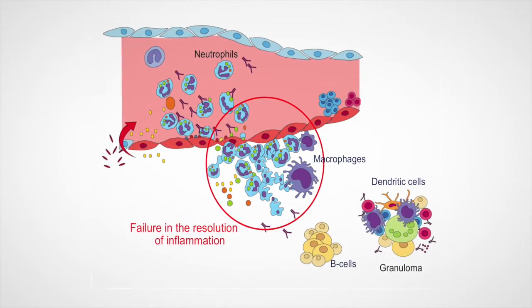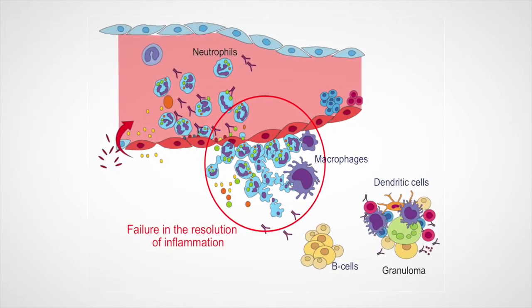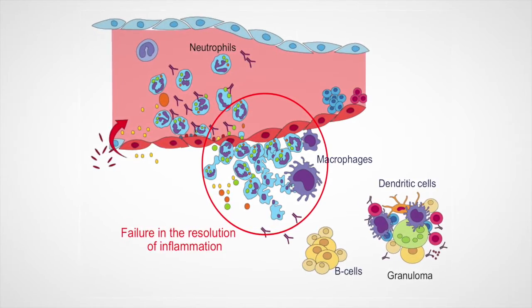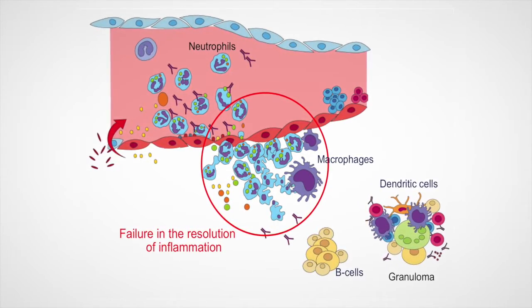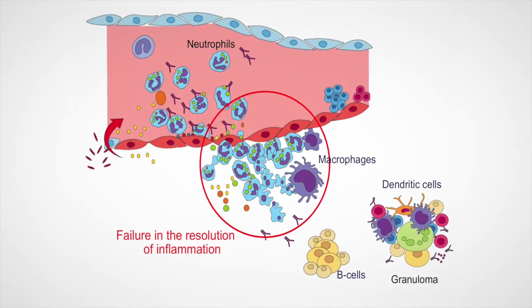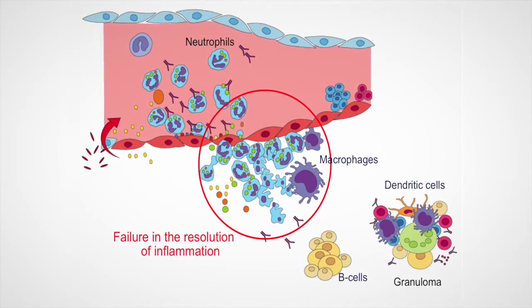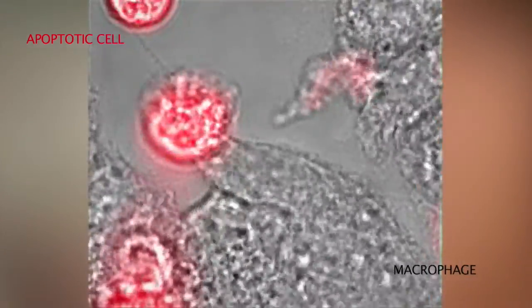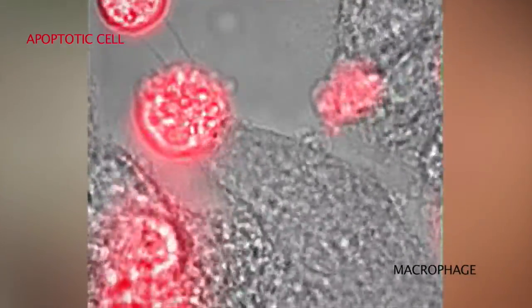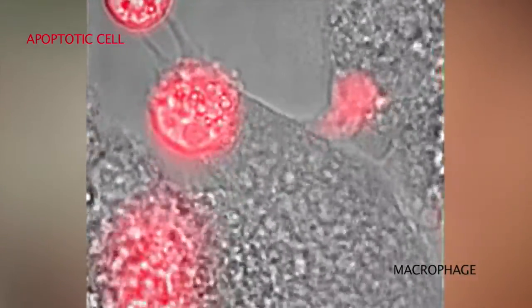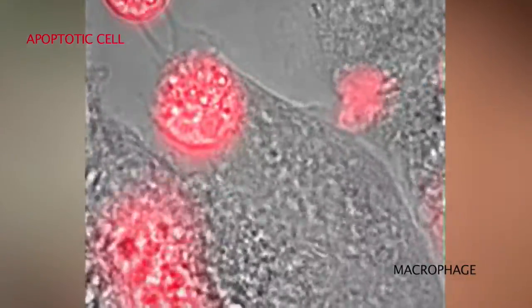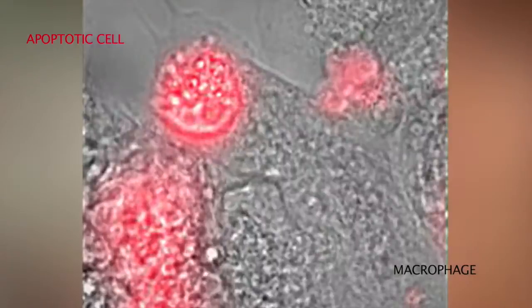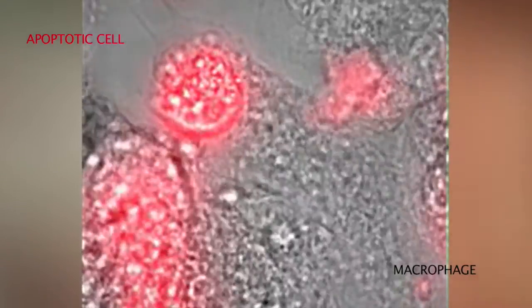A hallmark of this disease is a failure in the resolution of inflammation, and one crucial step in this process is the phagocytosis of apoptotic neutrophils by macrophages, which allows the return to homeostasis. Phagocytosis of an apoptotic cell will reprogram the macrophage towards an anti-inflammatory phenotype, which creates a microenvironment that favors immune silencing.